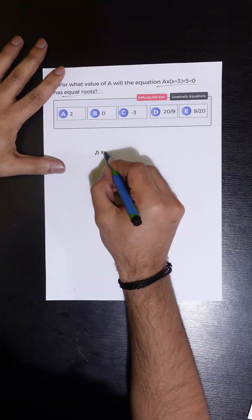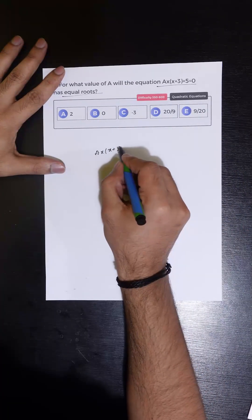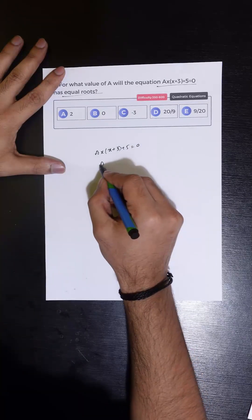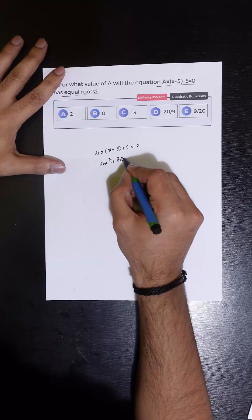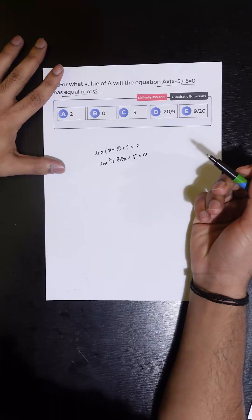The equation given is Ax(x+3) + 5 = 0. This is nothing but Ax² + 3Ax + 5 = 0.